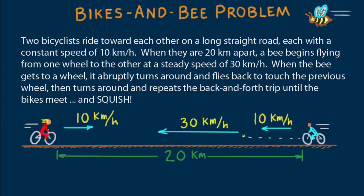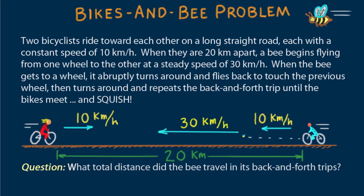When the bee gets to a wheel, it abruptly turns around and flies back to touch the previous wheel, then turns around and repeats the back-and-forth trip until the bikes meet and squish. What total distance did the bee travel in its back-and-forth trips?